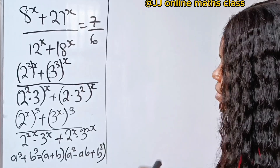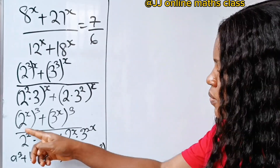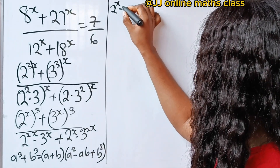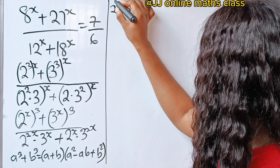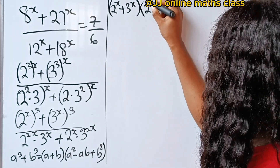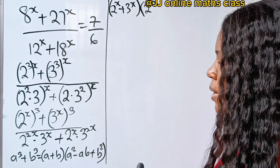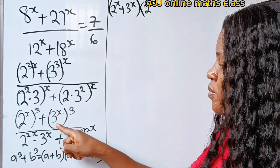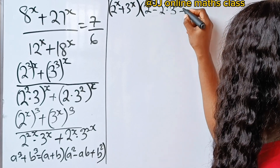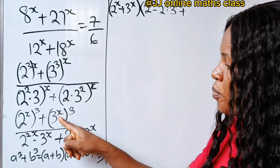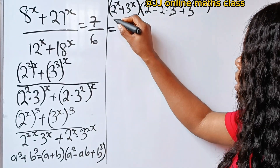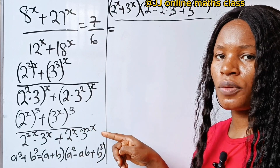So we express our numerator as (2^x + 3^x) multiplied by (2^(2x) − 2^x · 3^x + 3^(2x)). The first bracket is (2^x + 3^x), and the second bracket is 2^(2x) minus a·b, which is 2^x multiplied by 3^x, plus b squared, which is 3^(2x).